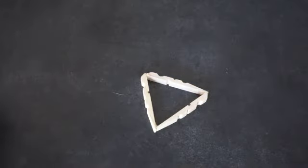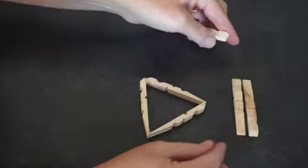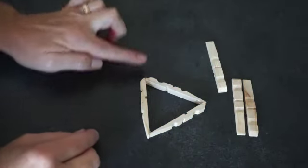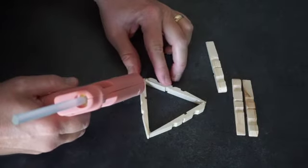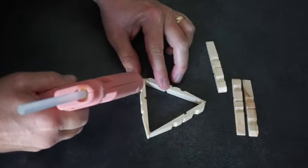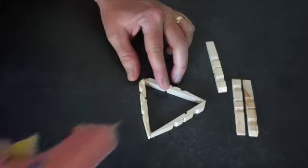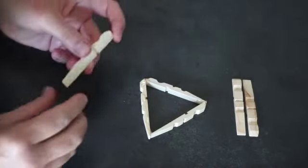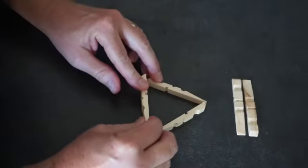Once the glue is dry on your triangle, take three more halves of clothespins and glue them directly over the three that are here. Put a line of glue right along the outside and make sure you line up your clothespins so that it goes right over the top in the same direction.